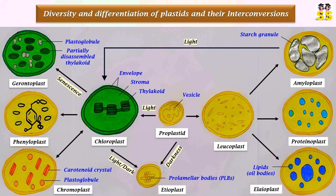Moving forward into the diversity and differentiation of plastids: plastids exist in different forms based on tissue type and developmental stages. Arrows indicate transitions between different plastid types. The proplastid acts as a precursor in the development of all plastids, developing into either a chloroplast on exposure to light or an etioplast on exposure to darkness.